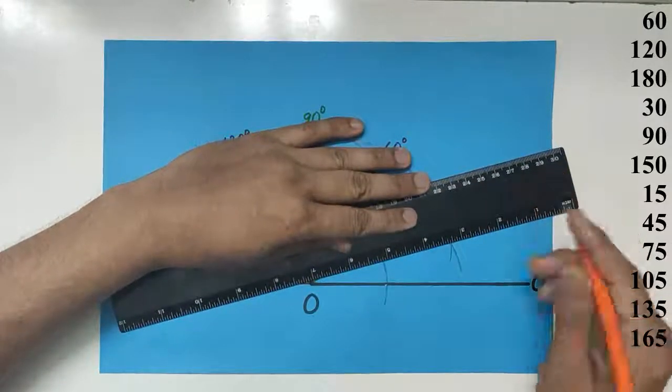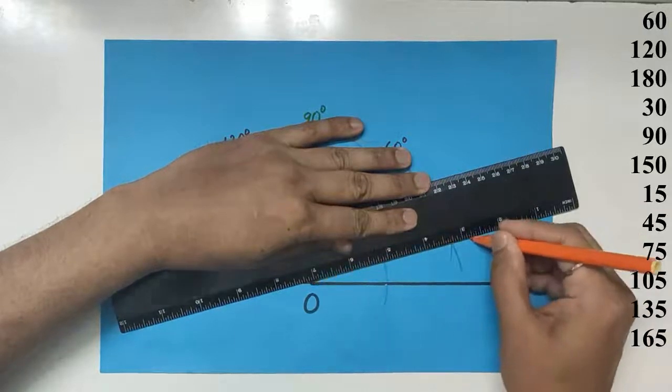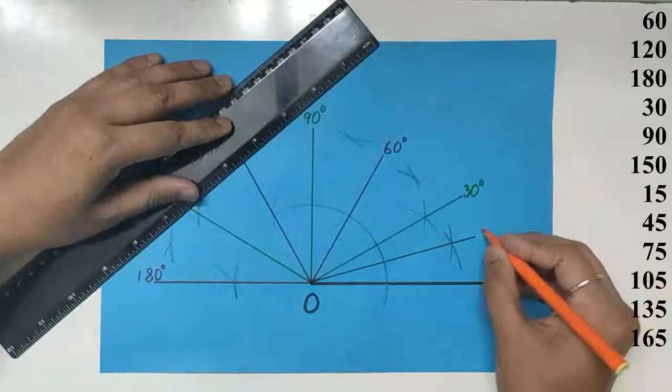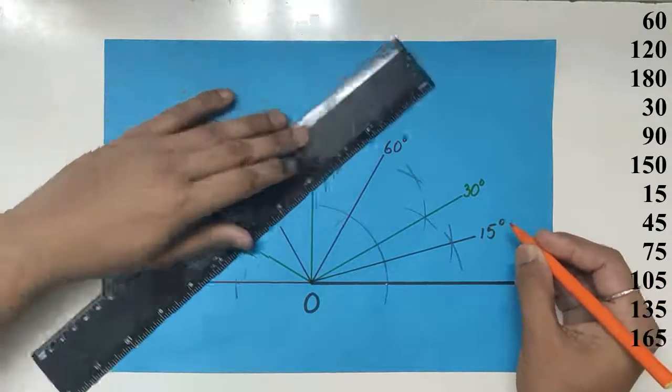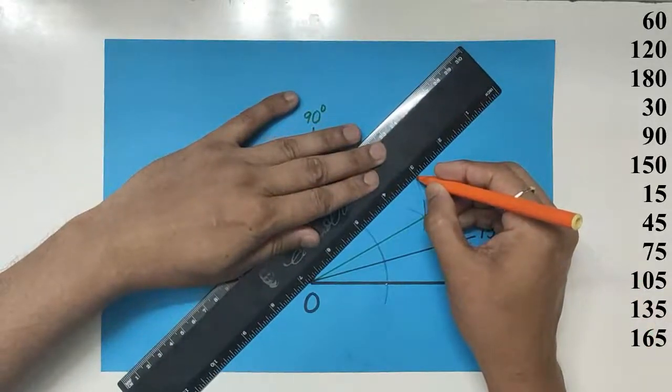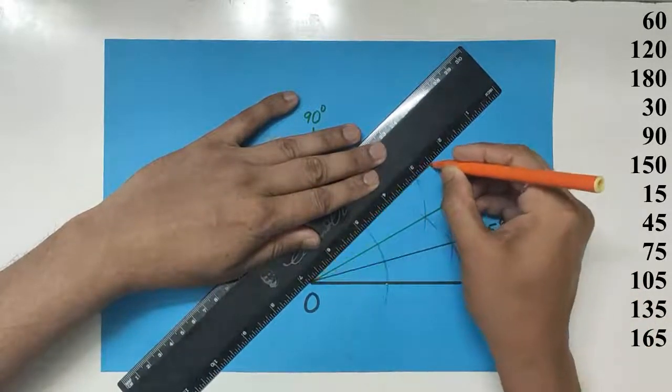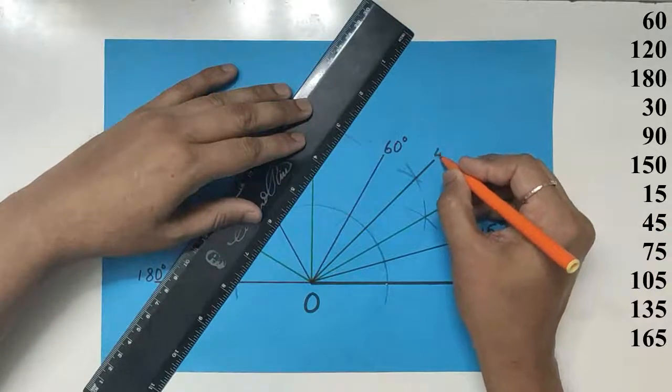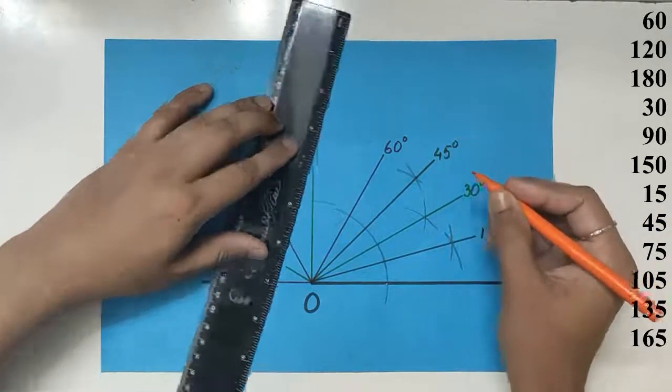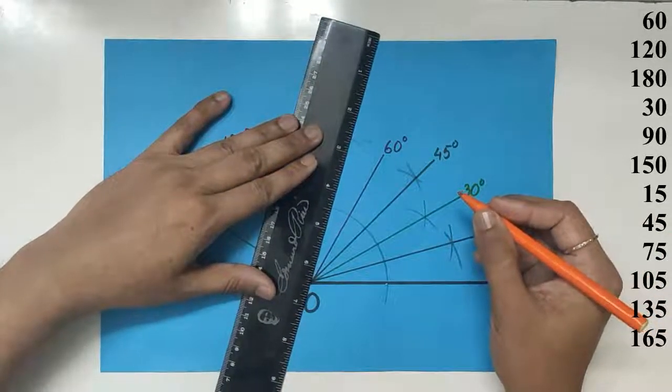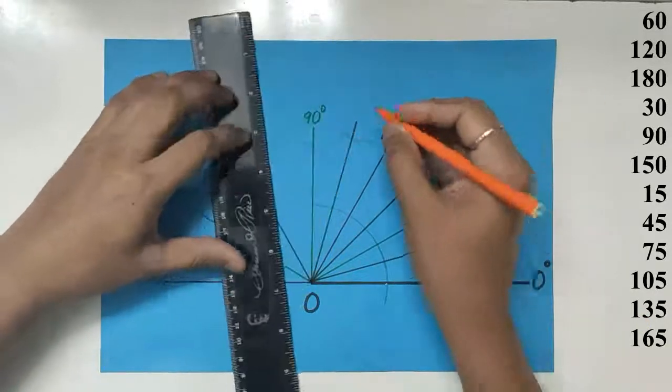We join these points to the center. That's 15 degrees. Between 30 and 60, we get 45. Between 60 and 90, we get 75.